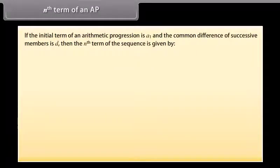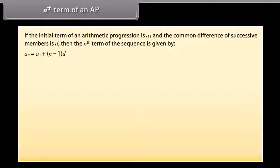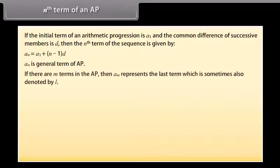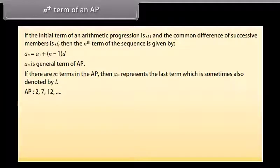If the initial term of an arithmetic progression is a1 and the common difference of successive numbers is d, then the nth term of the sequence is given by: a(n) = a1 + (n-1)×d. This is also called the general term of the AP. If there are m terms in the AP, then a(m) represents the last term, sometimes denoted by l. Using this formula, let's find the 8th term of the given AP.